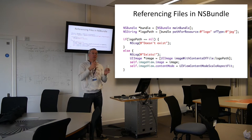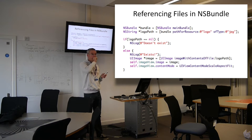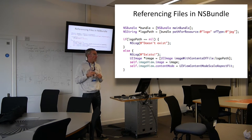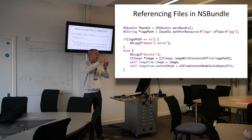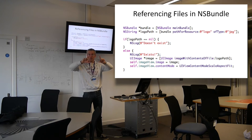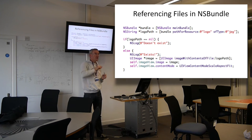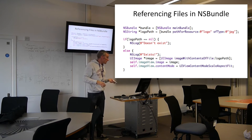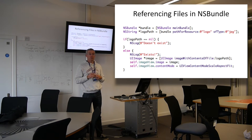We always test to make sure the path isn't nil before accessing the file, otherwise it would crash the program. I've introduced UIImage here - we create a UIImage with imageWithContentsOfFile and pass it the path to the file, then set self.imageView.image equal to the image. I've also added the contentMode property - if you don't set it, the image gets squashed into whatever shape your image view is. If you set contentMode to UIViewContentModeScaleAspectFit, it resizes the image view to match the proportions of your image.